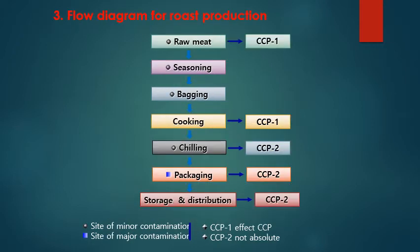For roast production, the process flow is: raw meat, seasoning, bagging, cooking, chilling, packaging, then storage and distribution. Raw meat is a CCP because it must be stored properly — either by refrigeration or frozen storage. Cooking is CCP1 — at the proper temperature and time, it can fully eliminate the hazard by killing any surviving pathogens. Chilling, packaging, and storage and distribution are CCP2, as they reduce further possibilities of hazard when handling the cooked product.